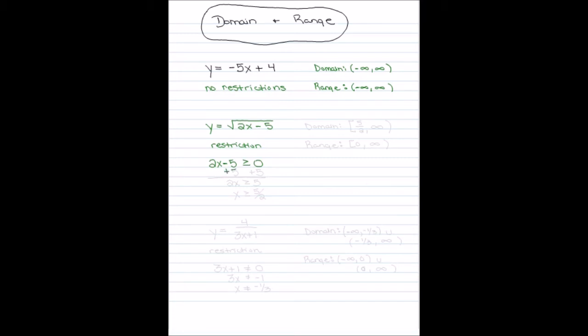So what we do now is we solve for X, and we get X is greater than or equal to 5 over 2. So any X value that is greater than or equal to 5 over 2 is going to be your domain — those are the values you can plug into this equation. So that's bracket 5 over 2 to infinity.